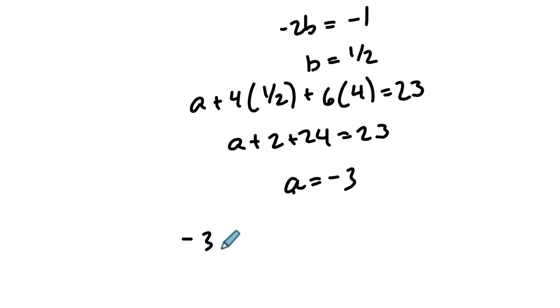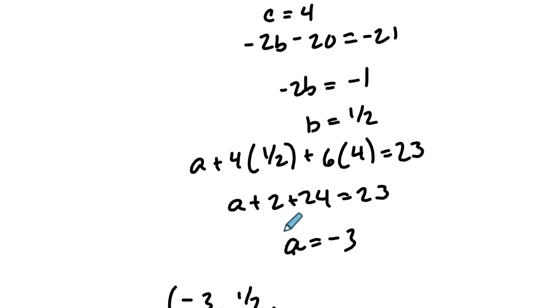And if this were a point, you could express it as a point. So A is negative 3, B is 1 half, and C is 4.